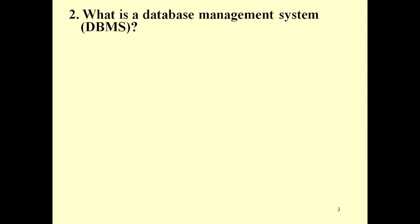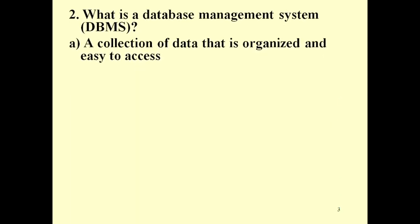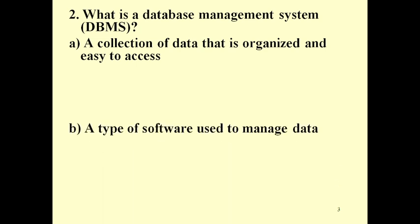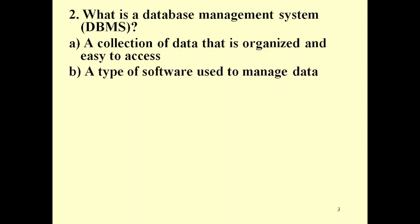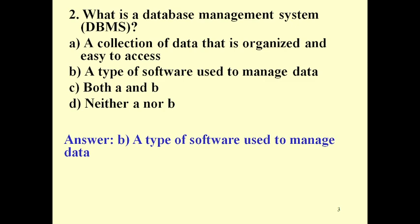Question 2: What is a database management system (DBMS)? A. A collection of data that is organized and easy to access. B. A type of software used to manage data. C. Both A and B. D. Neither A nor B. Answer: B. A type of software used to manage data.